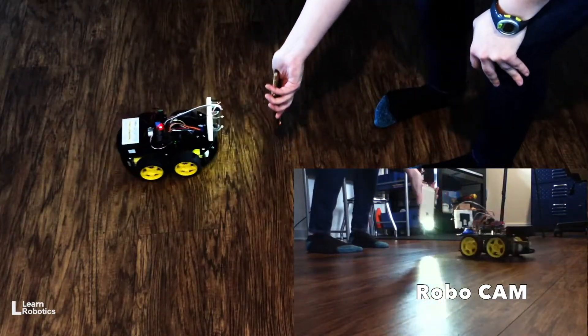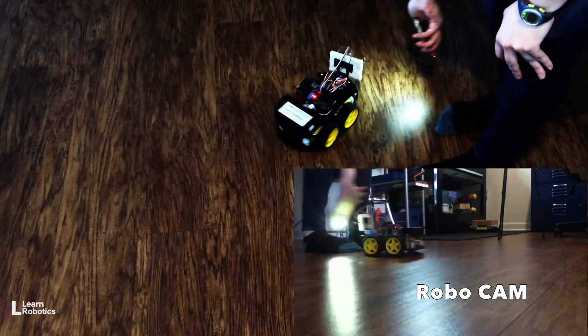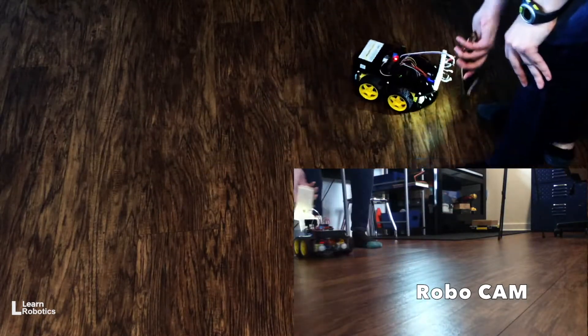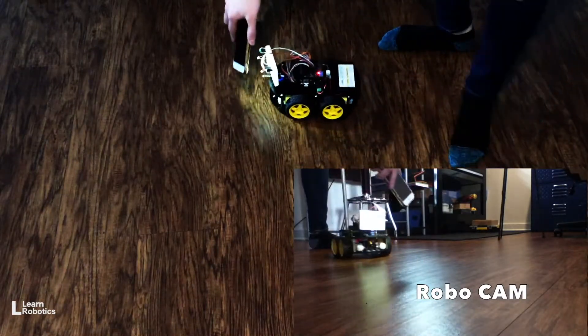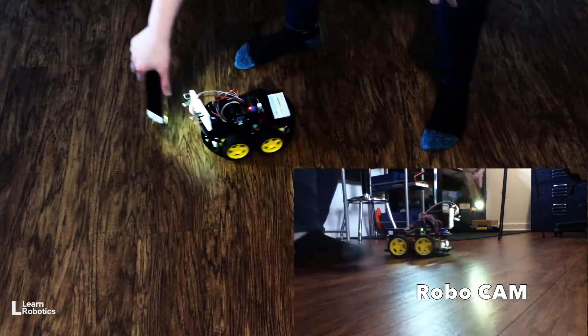One of the things I did notice is that the brightness isn't necessarily calibrated. Sometimes the light disperses and the robot can't detect that much of a brightness difference. So I will have to go through and tune it a little bit.